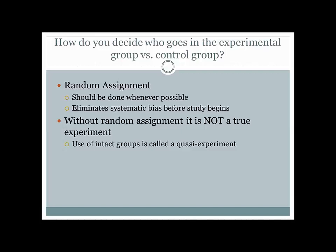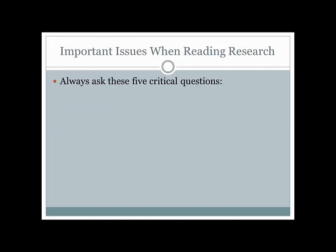Now that we've talked about the major research methods used in psychology, I want to give you five questions to ask anytime you are reading psychological research — whether in the news, online, or in a journal article. The first question is: how did they operationalize their variables? What were the operational definitions? The researchers had to decide how to measure each of their variables, and this definition is very important.